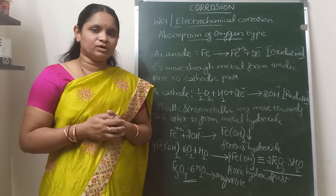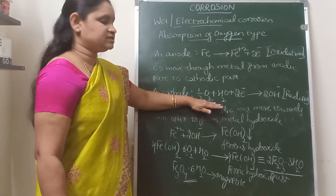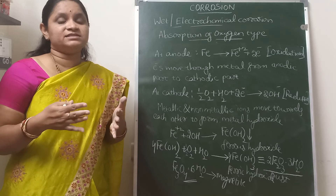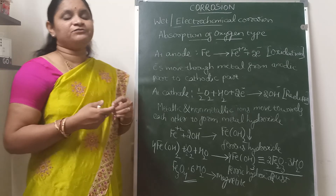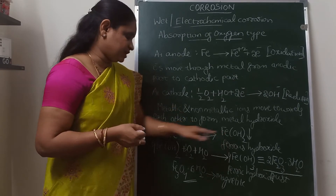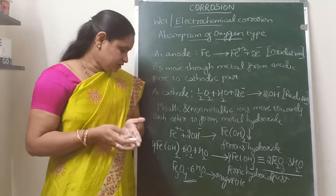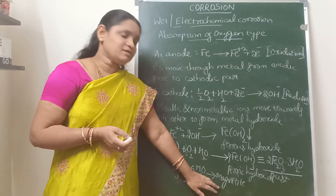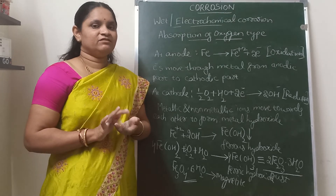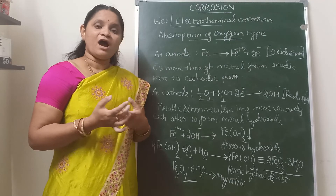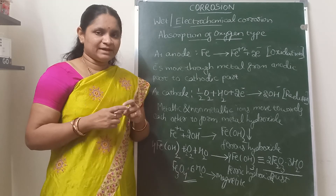Corrosion takes place at the anodic part, because there the metal is dissolving — converting to its derivative. At the cathodic part, the metal is protected from corrosion, as non-metallic ions are formed in presence of atmospheric oxygen and moisture. Both metallic and non-metallic ions migrate towards each other and form the corrosion product in between the anode and cathode.